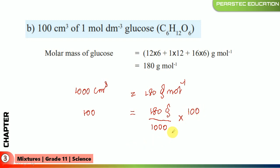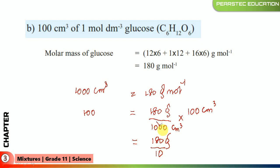For 100 cubic centimeters, we calculate 180 grams ÷ 1000 × 100, which simplifies to 180 ÷ 10. The answer is 18 grams of glucose required.